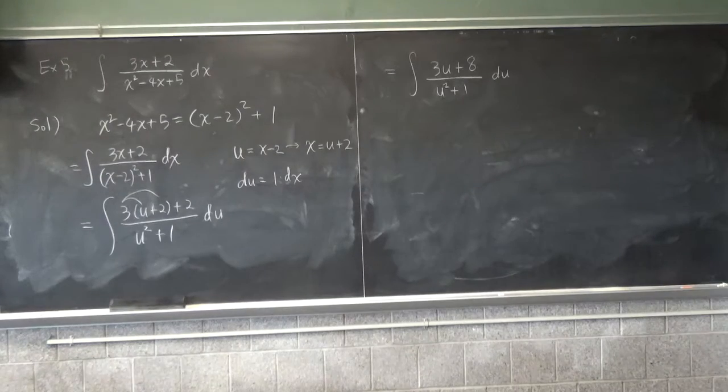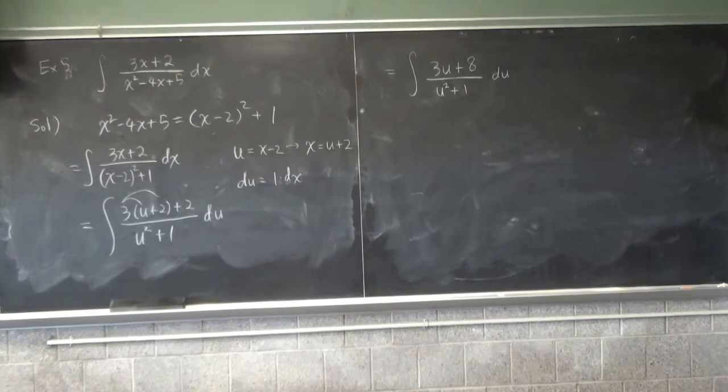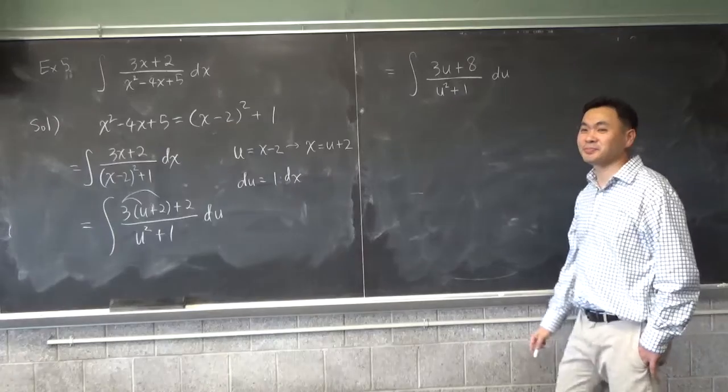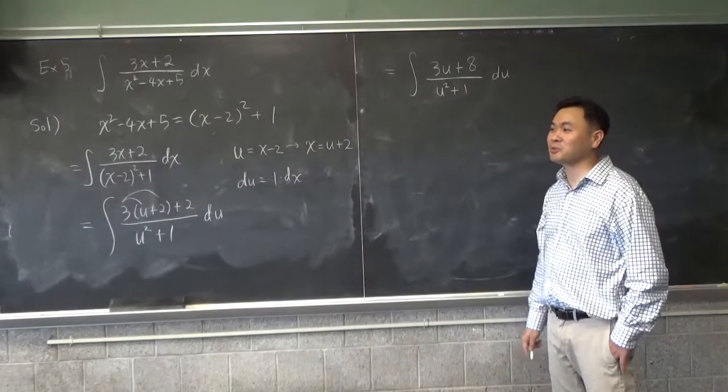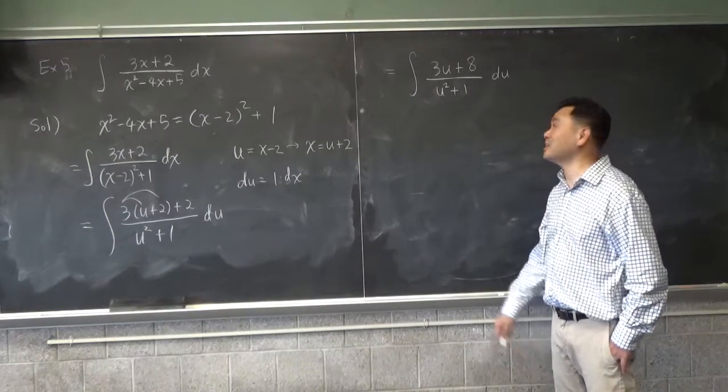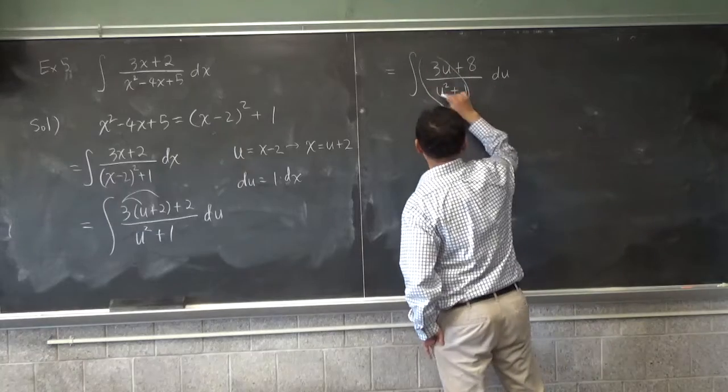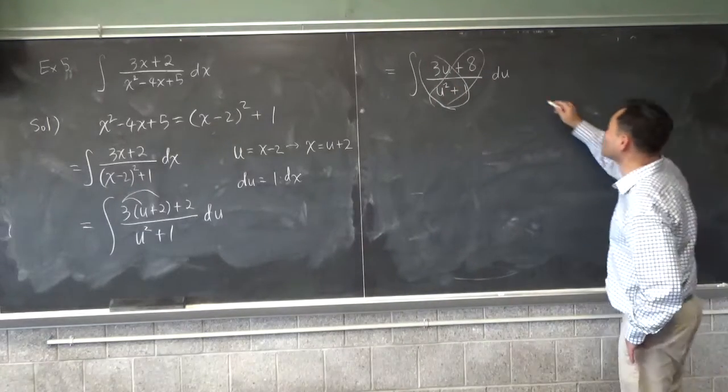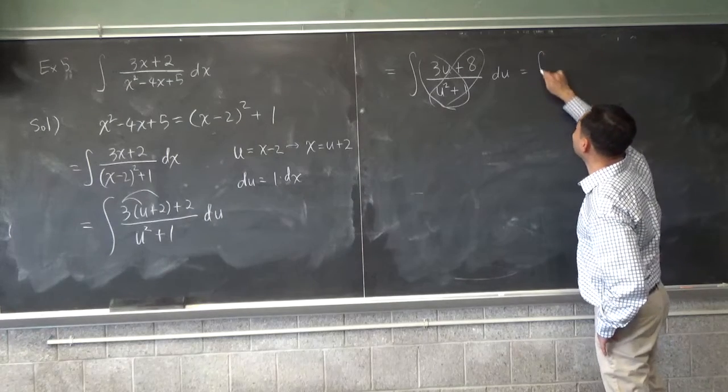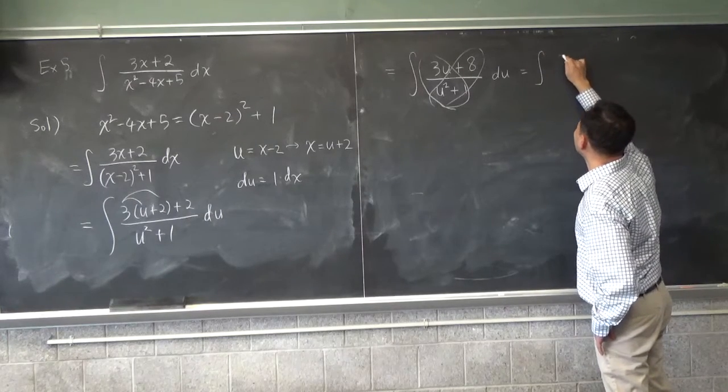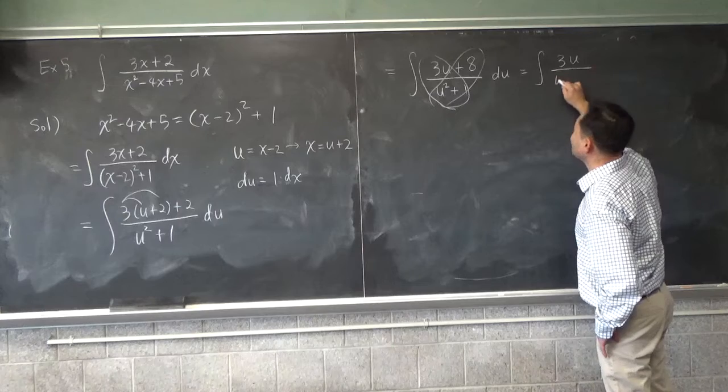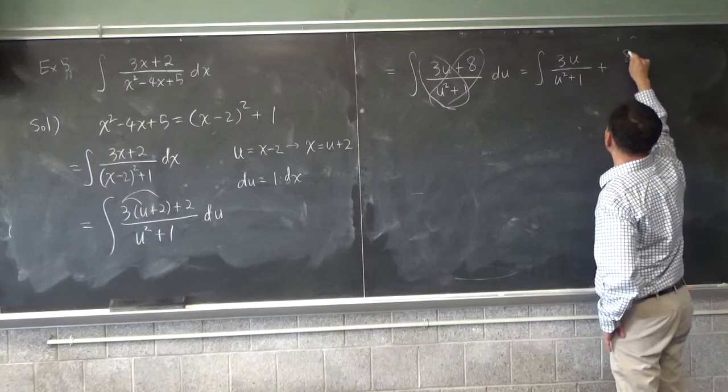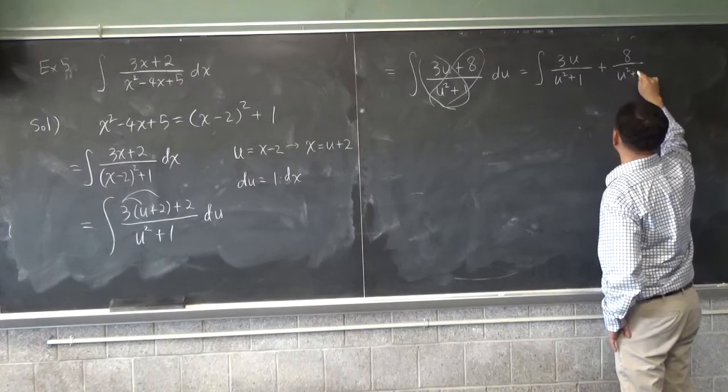Okay, how do you integrate this? Does anyone know? How do you integrate this one? Oh, you share the love. Yeah, wow, okay. I didn't expect anyone to answer that. Share the love. In other words, you split it into two fractions. One is like 3u over u squared plus 1 plus 8 over u squared plus 1 du.